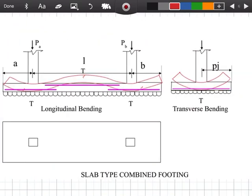For a slab type combined footing, this is our example later. It's like an inverted beam and column. Like an inverted beam and column.